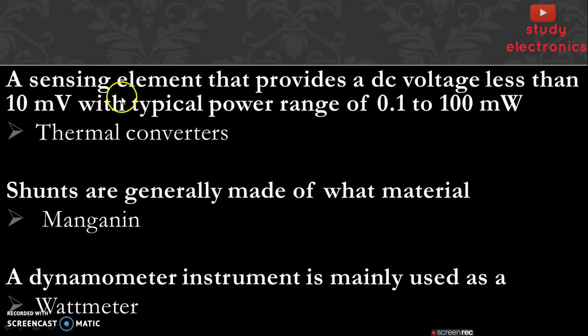Next, a sensing element that provides a DC voltage less than 10 millivolt with typical power range of 0.1 to 100 milliwatt, that is thermal converters. Next, shunts are generally made up of manganin. A dynamometer instrument is mainly used as watt meter.